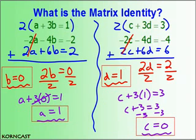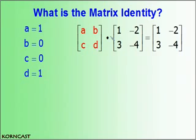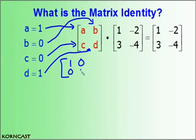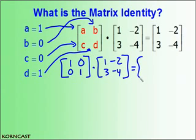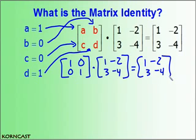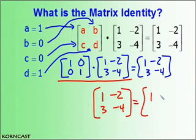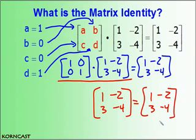Now we go back to the original equation — A, B, C, D times our matrix — and substitute in the values. A equals 1, B equals 0, C equals 0, and D equals 1. Multiplying that matrix times our original matrix, assuming all math is correct, the product should give us 1, negative 2, 3, negative 4 — equal to what it should be equal to.